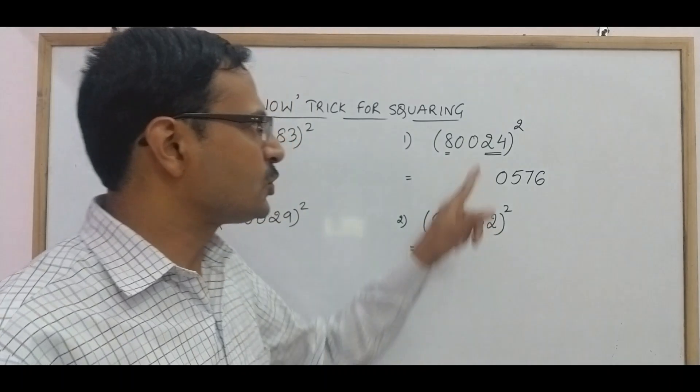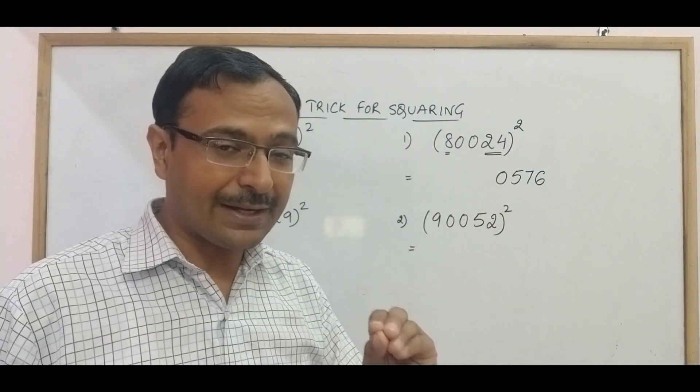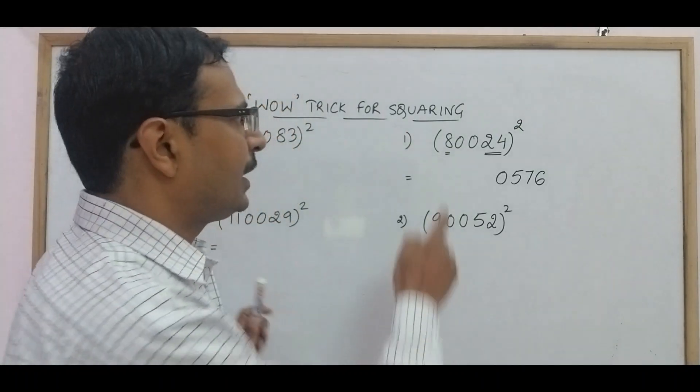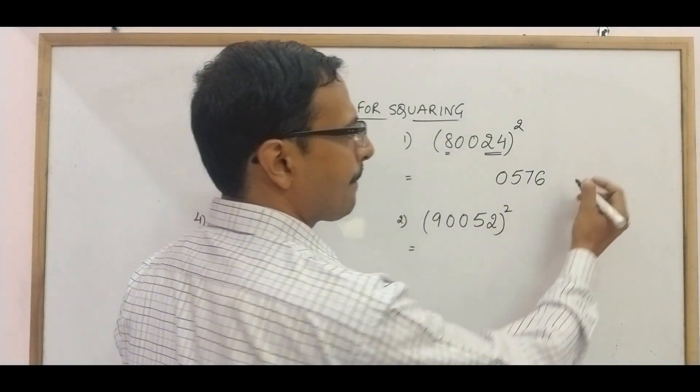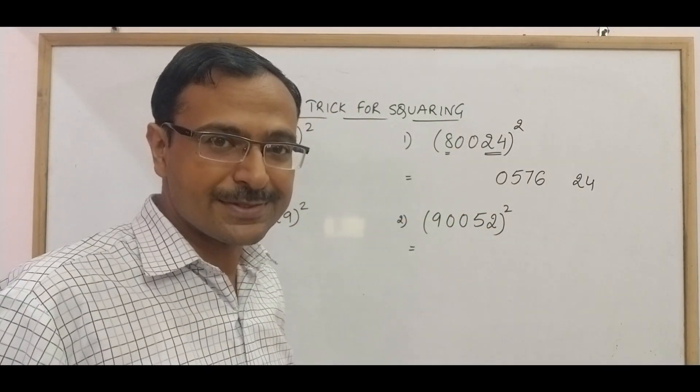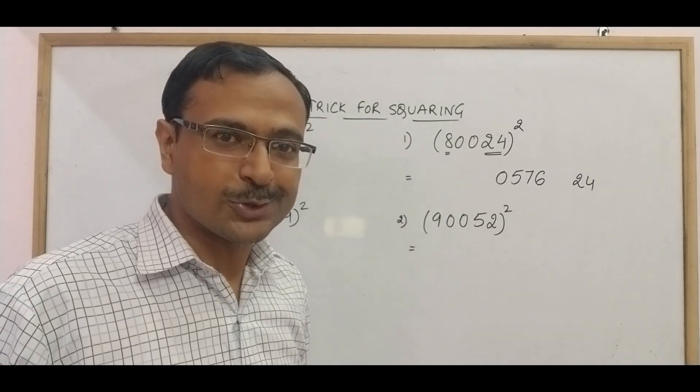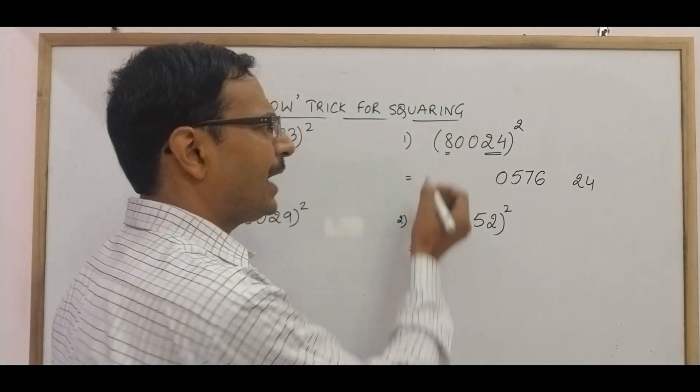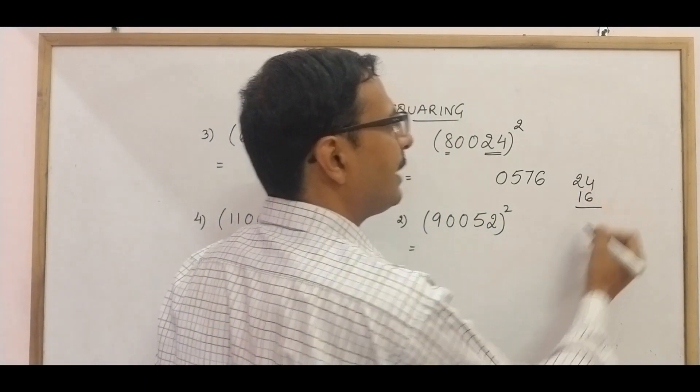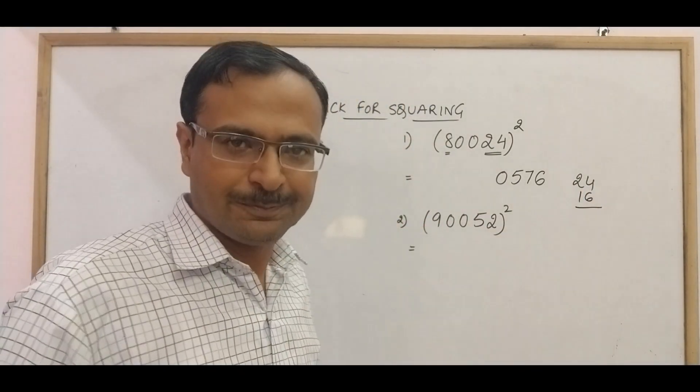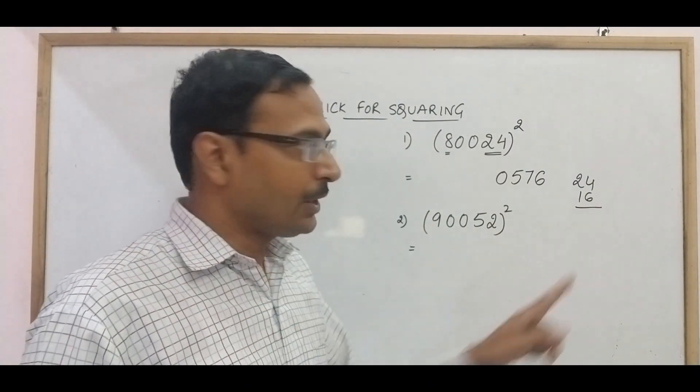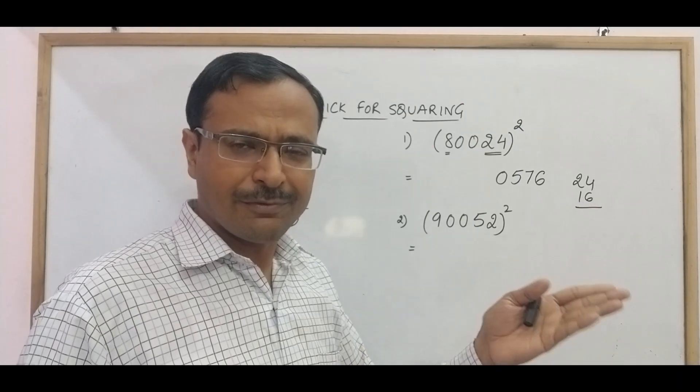One important thing. So 24 square is 576 but I will write it as 0576. Now the second step, 24 and then 8, I need to multiply those numbers. But I need to double that product also. So what I do is, I will double it here itself. So 8 into 2 is 16 and now I will multiply 24 and 16. Instead of having two steps, I will convert that into a single step.